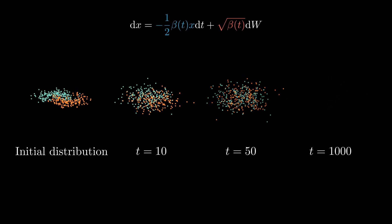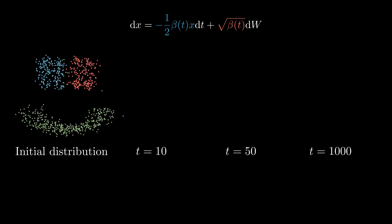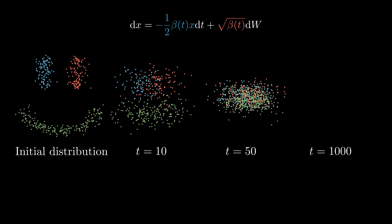In fact, over time, this stochastic differential equation transforms any initial distribution into a Gaussian. This is just another way of looking at what happens in the forward process of DDPM, where we gradually turn images into pure noise. Here, we gradually transform any distribution into a Gaussian.